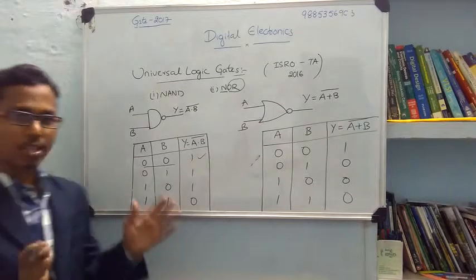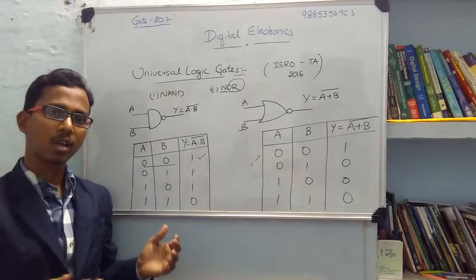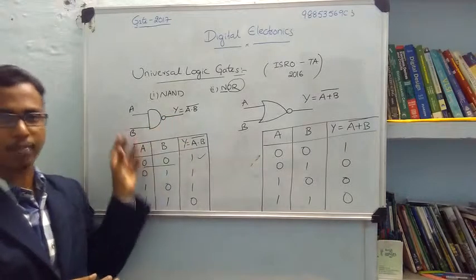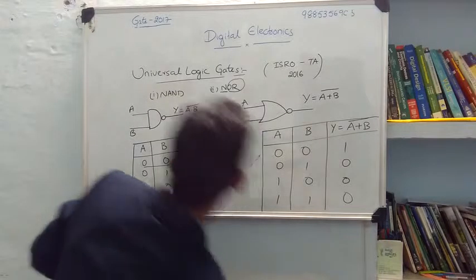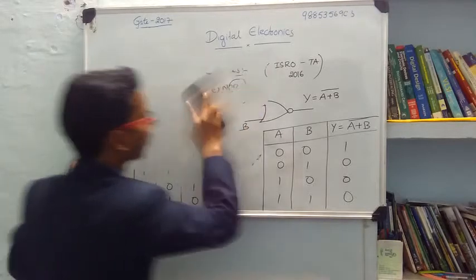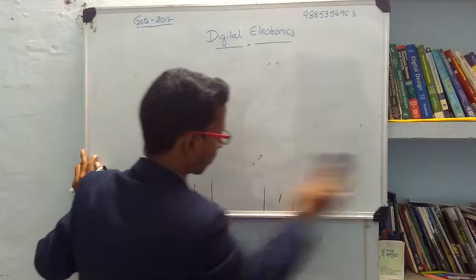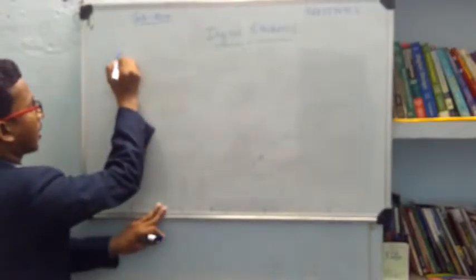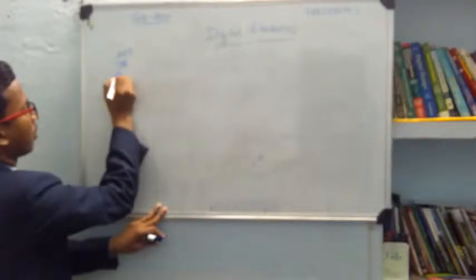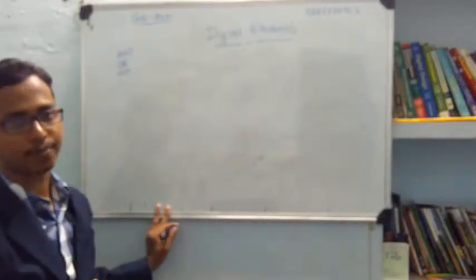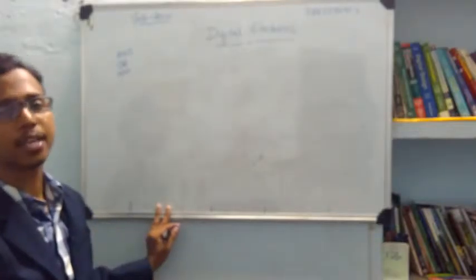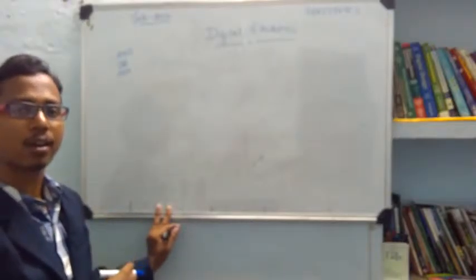This is the concept of universal logic gates. Why they are called universal logic gates: every function of the basic gate is implemented by using NAND and NOR. The basic gates are AND gate, OR gate, and NOT gate. We have to obtain AND gate, OR gate, and NOT gate by using the universal gates. All the basic gates are implemented by NAND and NOR — that is why they are called universal gates.